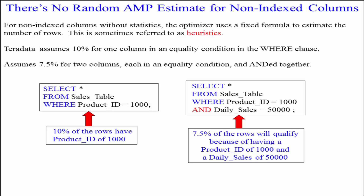Teradata assumes 7.5% for two columns each in an equality condition that are ANDed together. For example, SELECT everything FROM sales table WHERE product ID equals 1000 AND daily sales equals 50,000. It's these type of heuristics that Teradata makes assumptions on that have proved to be worthy of doing.